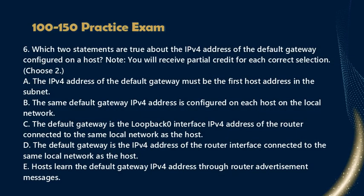Question 6: Which two statements are true about the IPv4 address of the default gateway configured on a host? Note: you will receive partial credit for each correct selection. Choose two. a. The IPv4 address of the default gateway must be the first host address in the subnet, b. The same default gateway IPv4 address is configured on each host on the local network, c. The default gateway is the loopback 0 interface IPv4 address of the router connected to the same local network as the host, d. The default gateway is the IPv4 address of the router interface connected to the same local network as the host, e. Hosts learn the default gateway IPv4 address through router advertisement messages.